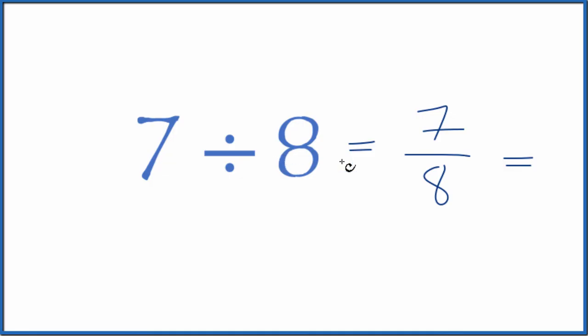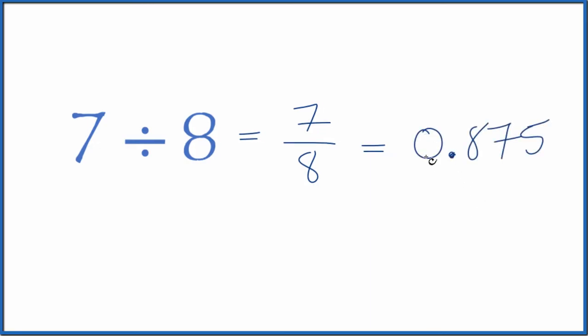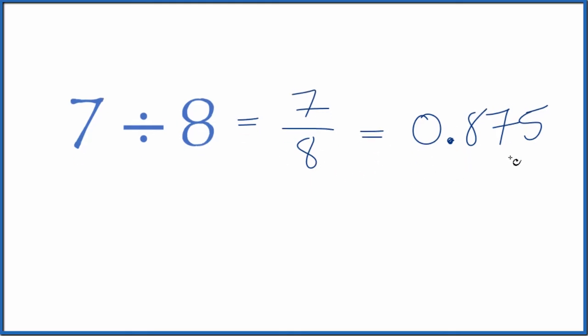We could also divide 7 by 8 on our calculator. We do that, 7 divided by 8, that gives us 0.875. So 7 divided by 8 is the fraction seven-eighths, or we could also call it the decimal 0.875.